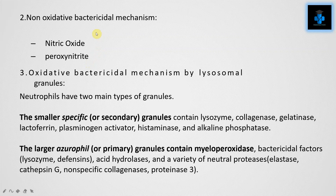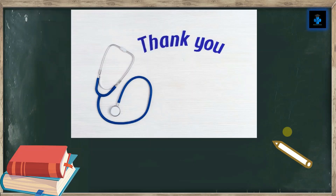Other mechanisms include nitric oxide, which is a soluble gas produced from arginine by the action of nitric oxide synthase. We also have the oxidative bactericidal mechanism by lysosome granules. Neutrophils have two main types: the smaller specific or secondary granules contain lysozyme, collagenase, gelatinase, lactoferrin, plasminogen activator, histaminase, and alkaline phosphatase. The larger azurophilic or primary granules contain myeloperoxidase, bactericidal factors such as lysozyme, defensins, acid hydrolases, and neutral proteases such as elastase, cathepsin G, non-specific collagenases, and proteinase 3.